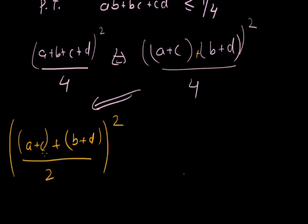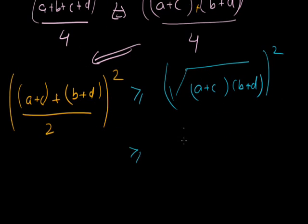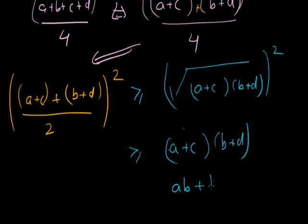We know that the arithmetic mean is greater than or equal to the geometric mean. Using the geometric mean of A plus C and B plus D, since there are two quantities we take the square root: under root of (A plus C)(B plus D). This quantity under the square root expands to AB, then AC, then BC, then CD, then AD.